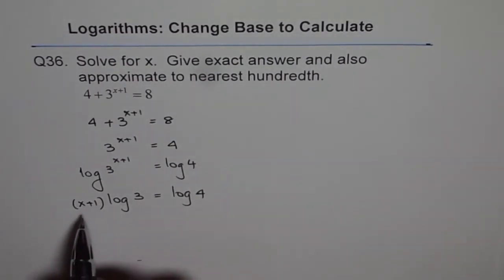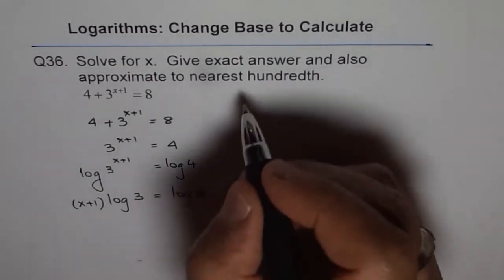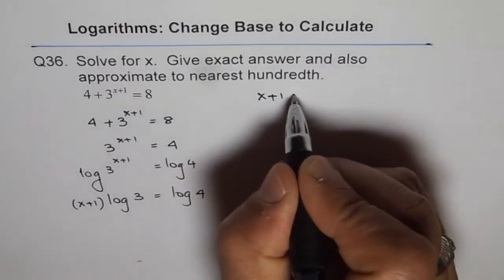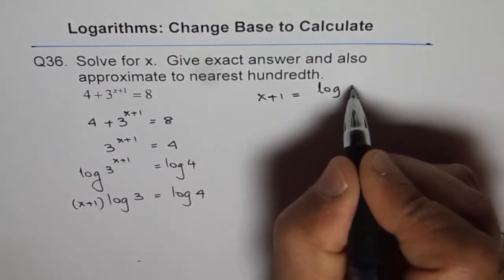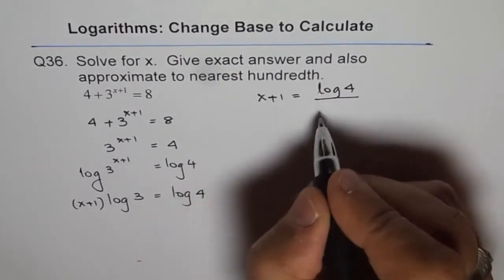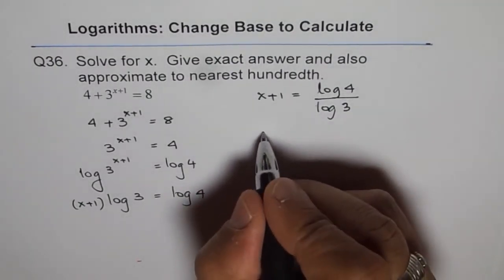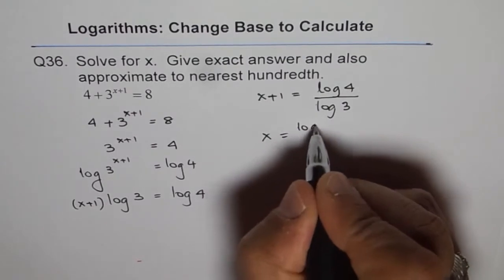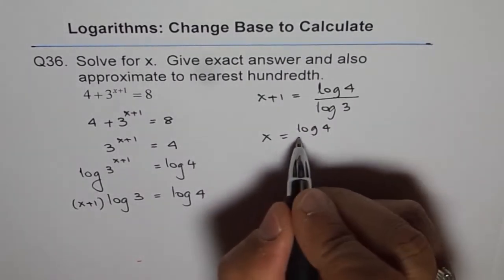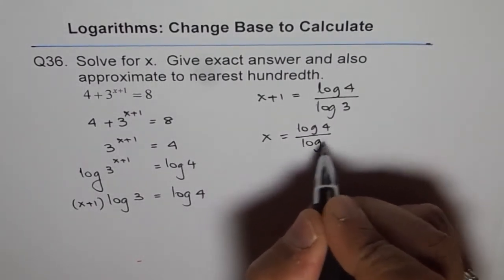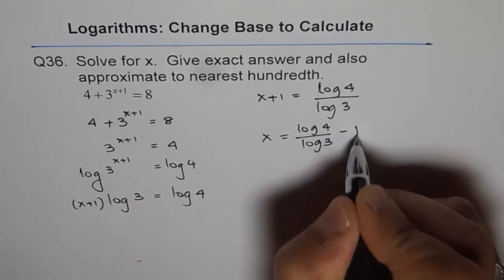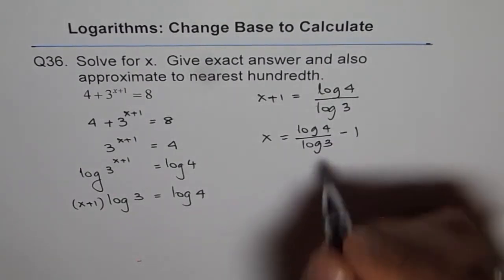And from here we can find what x plus 1 is. So x plus 1 equals to log of 4 divided by log of 3. Or x is equals to log of 4 over log of 3 minus 1. So that is the exact answer.